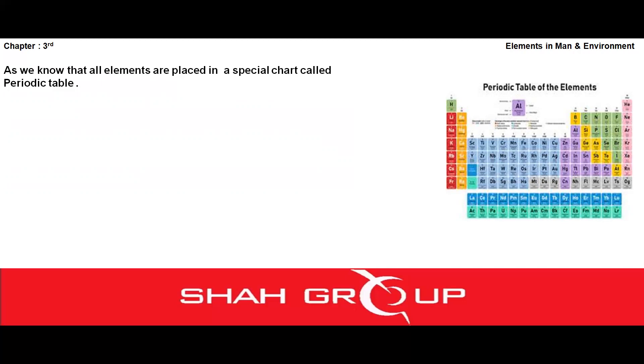Elements ko symbols dete waqt humne different languages ko istamal kiya hai jaise ki English, Latin, German. Yeh 118 elements jo discover ho chuke hain, bachon yeh 118 elements periodic table ke andar maujud hain.